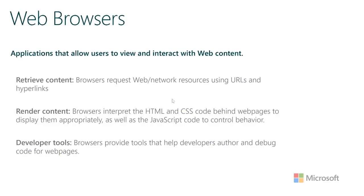The web browser is the application that allows users to view and interact with content on the web. Web browsers are behind the scenes retrieving the content that we request — they send the request to web servers once we type a URL or click on a hyperlink. Once they receive those files back from servers, browsers know how to interpret the code — HTML and CSS — to display those web pages appropriately. When it comes to developing for the web, web browsers have built-in tools we refer to as developer tools that help author and debug code as you're working on your web pages.